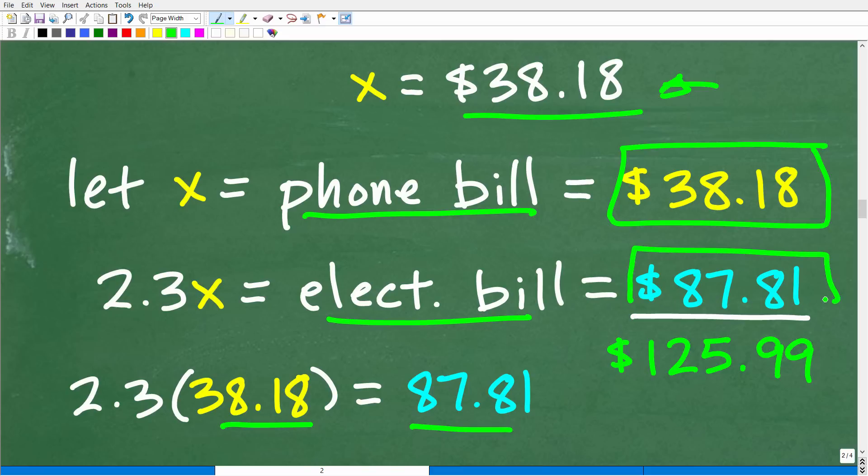So to check this, we can just simply be like, all right, if I did this right, this total should be about $126. And of course, we can add both for these, 38.18 plus 87.81, and we get 125.99, which is pretty close to 126.